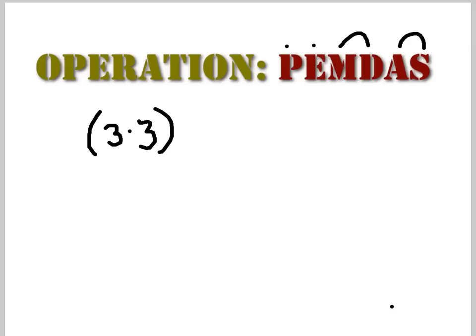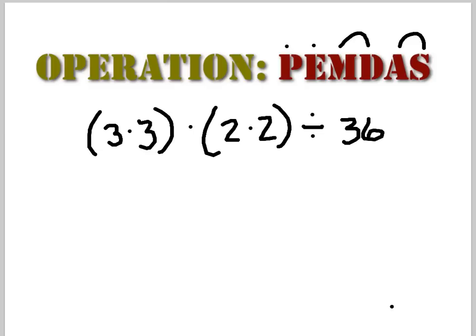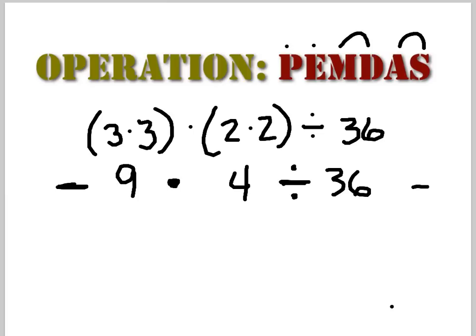Let's try (3 times 3) times (2 times 2) divided by 36. Do we have parentheses? Yes. 3 times 3 equals 9, and 2 times 2 equals 4. We've taken care of the parentheses. No exponents. Now we have 9 times 4 divided by 36. Multiplication and division, left to right: 9 times 4 equals 36, and 36 divided by 36 equals 1.